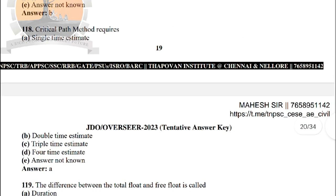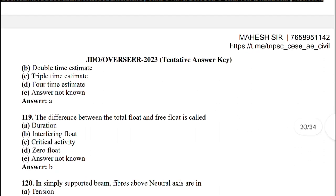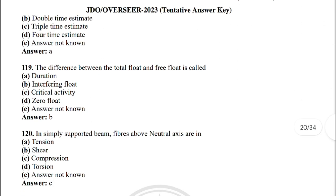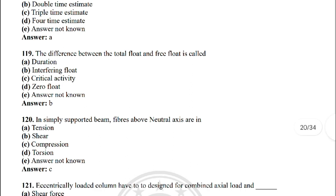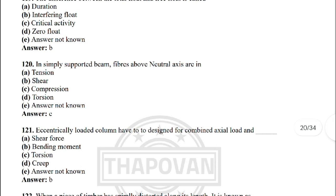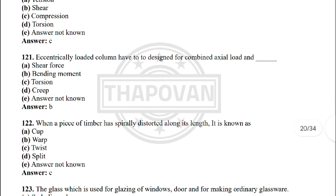Next: critical path method requires — the correct answer is: single time estimate. Next: the difference between the total float and free float is called — the correct answer is option B: interfering float.